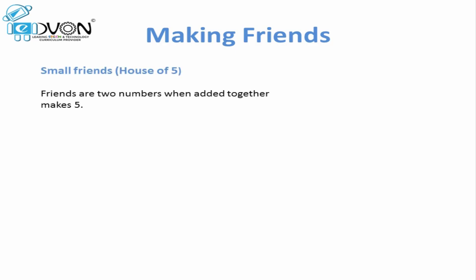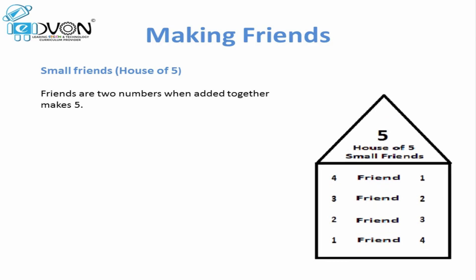Let's consider we have a house and the head of that house is number five. If five is the head, then which numbers would be living under five? Numbers that are smaller than five are found under the house of five — that is four, three, two, and one.